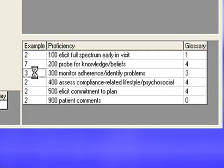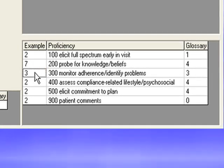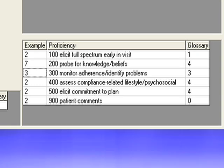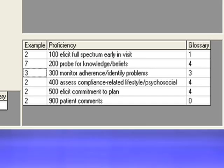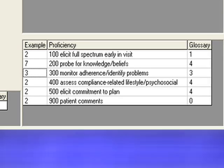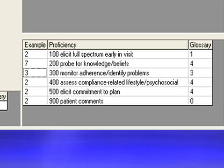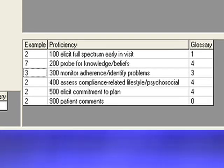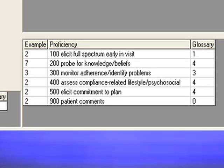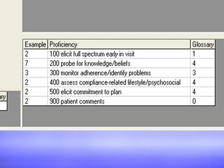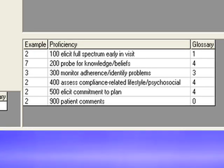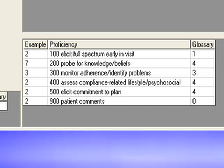For instance, specific skills that are useful to promoting patient adherence are displayed here. By clicking the number in the column to the left of each proficiency, you may retrieve where, in the visit, these skills were used, or parts of the visit where these skills may have been incorporated.